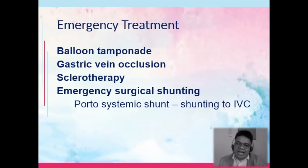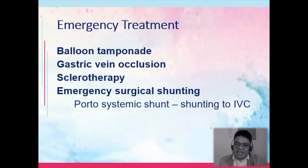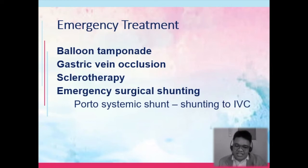Balloon tamponade places pressure on the bleeding site. Gastric vein occlusion may be done through a thrombus to occlude the gastric vein to stop bleeding. Sclerotherapy involves the injection of a sclerosing agent — consider what the sclerosing agent does and how it helps patients with varices.